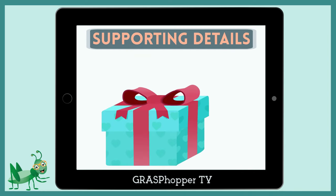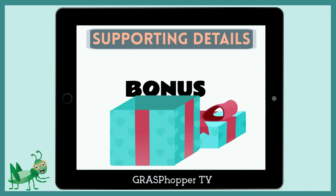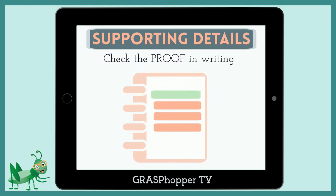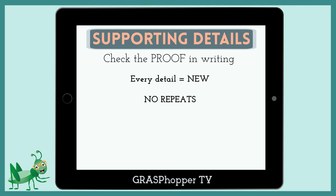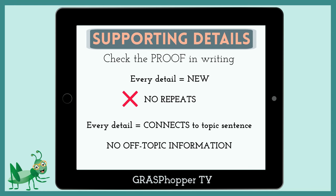You made it to the bonus! When revising your own writing, you also want to check the supporting details. One thing to check is that every detail gives new information — you don't want to repeat the same information. You also want to check that each detail connects to the topic sentence. You don't want to include off-topic information.